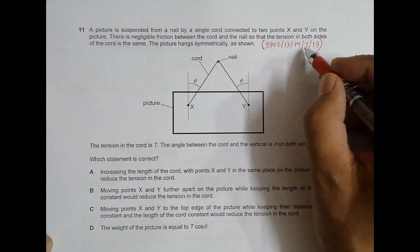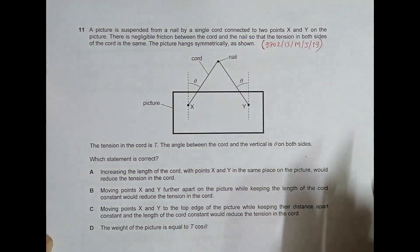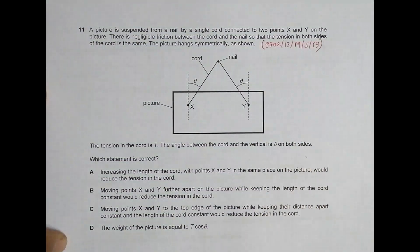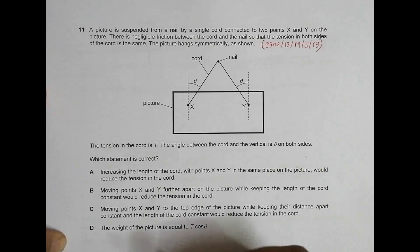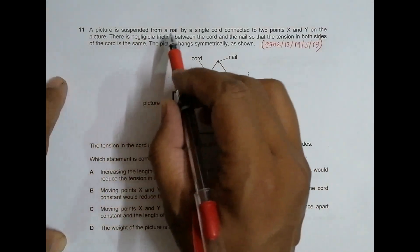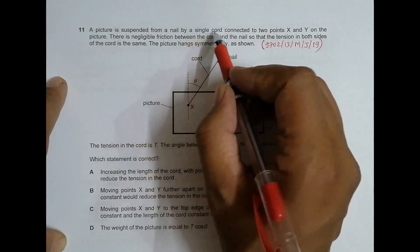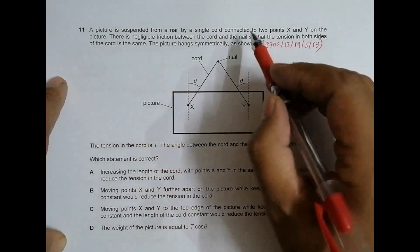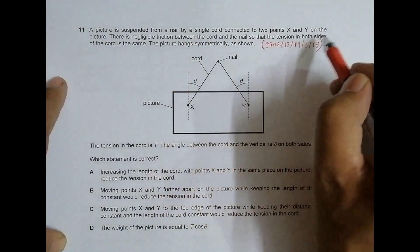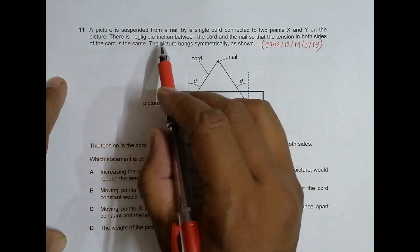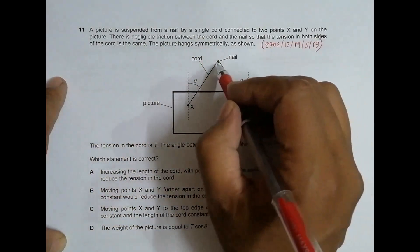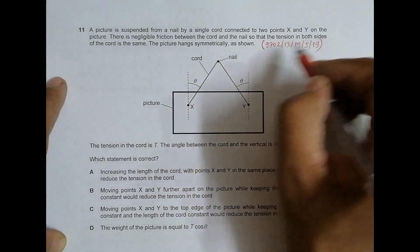This is the 2019 May/June Paper 1, Question 11, concerned with the chapter of forces and vectors, dealing with angles of application of forces. A picture is suspended from a nail by a single cord connected to two points X and Y on the picture. There is no friction between the cord and the nail, so the tension on both sides of the cord is the same.